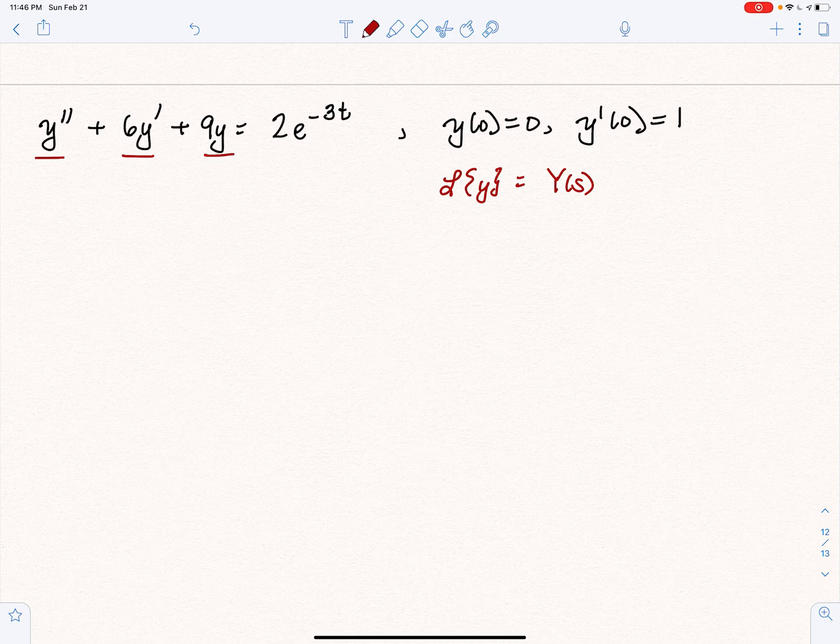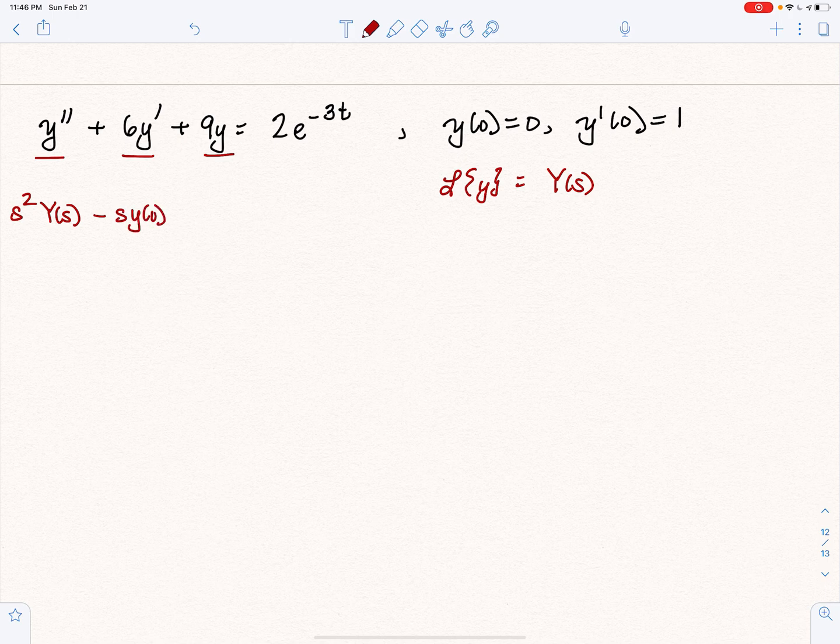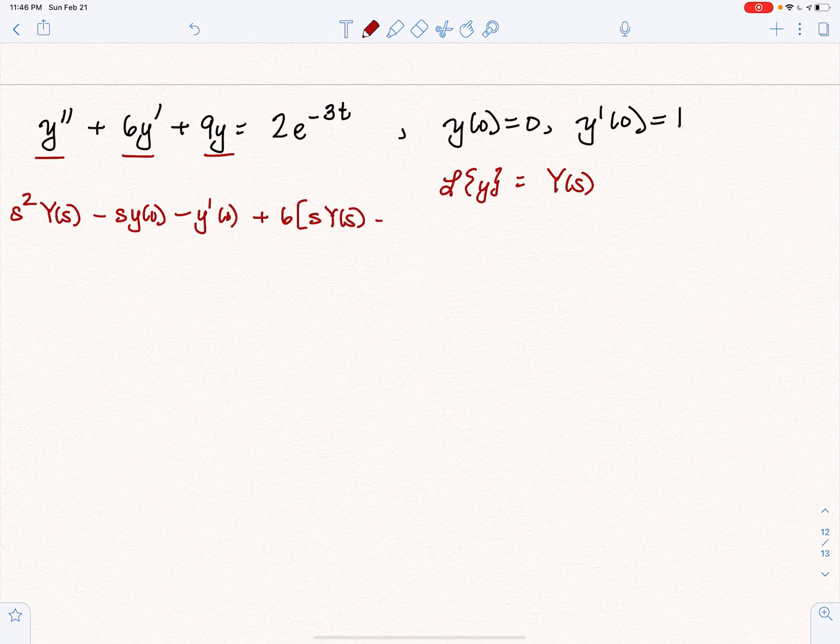So Y double prime becomes S squared Y of S minus S Y of 0 minus Y prime of 0, plus 6 times the Laplace transform of Y prime, which is S Y of S minus Y at 0.